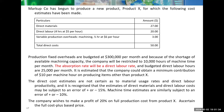Let's take a look at this example. Markup company has begun to produce a new product, Product X, for which the following estimates have been made. The material cost is $27, labor cost is $20 (four hours at a rate of $5 per hour), and variable production overheads include machining at half an hour at $6 an hour, giving $3. So the total direct costs are $50 for material, labor, and variable production overheads.